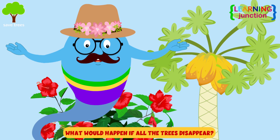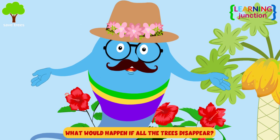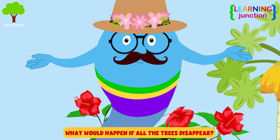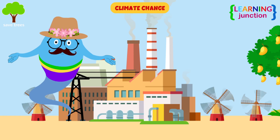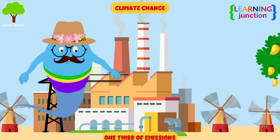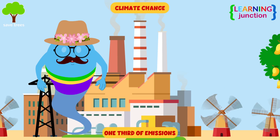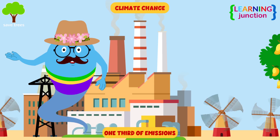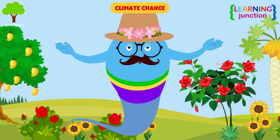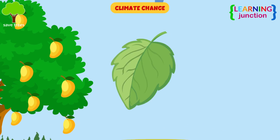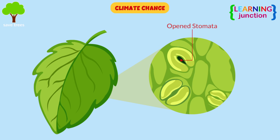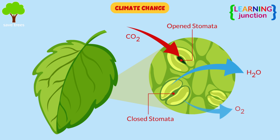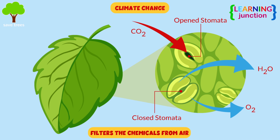Let us see what would happen if all the trees disappeared. Climate change. The world's forests absorb one-third of emissions every year. Trees absorb the toxic gases and chemicals through their stomata, or pores, effectively filtering these chemicals from the air.